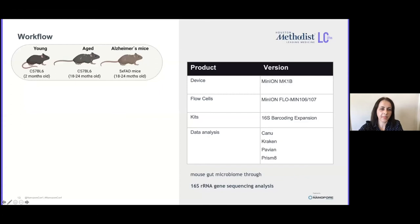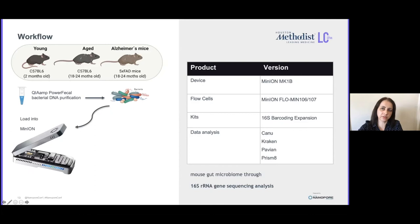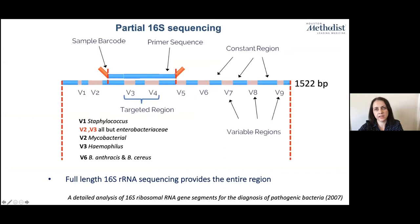We designed the following experiment in young, aged, and Alzheimer's disease mice. We extracted bacterial DNA from stool samples, performed 16S rRNA amplicon barcoding, and put it into libraries. We used the nanopore kit followed by sequencing on a MinION platform. The traditional 16S analysis only looks at a subset of variable regions, but Oxford Nanopore enables full-length 16S rRNA analysis and allows us to look at the entire gene, including all variable regions.